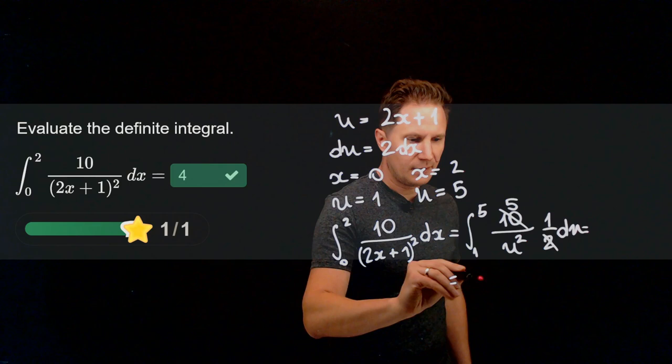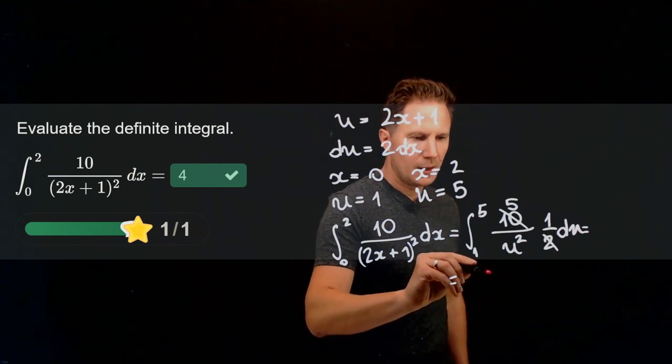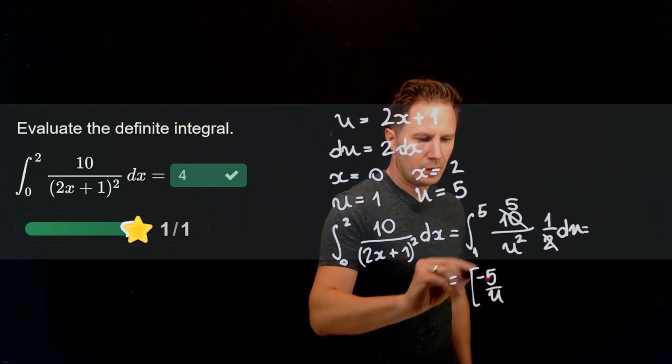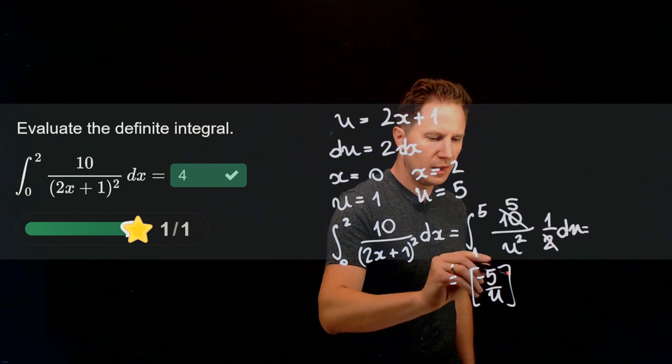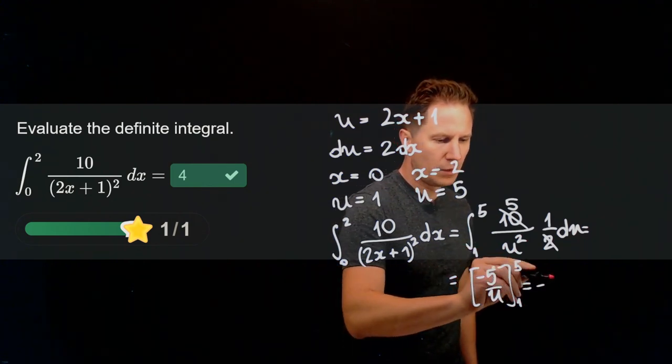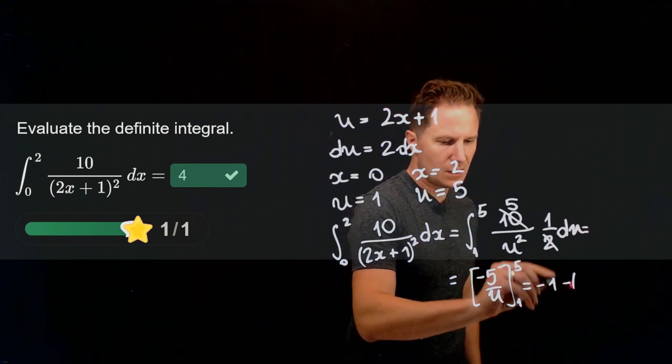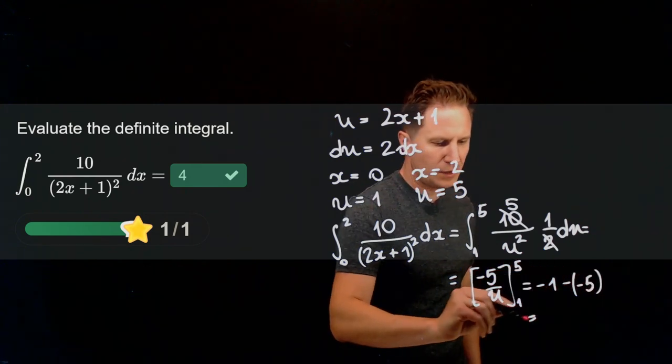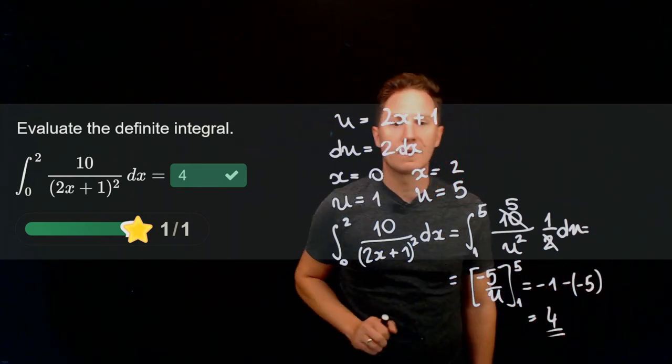So what we are left with is 5 over u squared. An anti-derivative for that would be negative 5 over u. We need to evaluate this between 5 and 1. What we get is negative 1 minus negative 5. So that's 5 minus 1 that's equal to 4. Let's look at the next question.